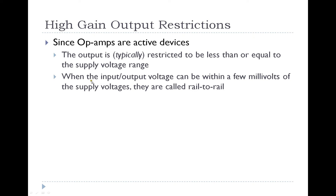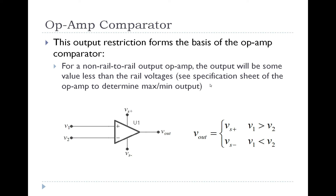When the output voltage can be within a few millivolts of the supply voltages — in this example plus 5 and negative 5 — they're called rail-to-rail op-amps. Some operational amplifiers, depending on the manufacturer and model number, are rail-to-rail and will go all the way to the extent of the supply voltage, while some are not. We have to look at our specification sheets to understand how those operate. This high-gain output restriction forms the basis of an op-amp circuit called a comparator, and we'll talk about how the comparator works in the next video.